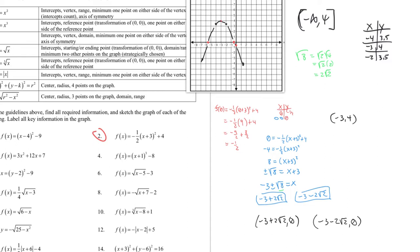Once you've graphed it, it's easy to see the range. Since the parabola opens downward with vertex at (-3, 4), the range goes from negative infinity up to 4, and 4 is included. So range: (-∞, 4]. The axis of symmetry is x equals the x-coordinate of the vertex, which is x = -3.